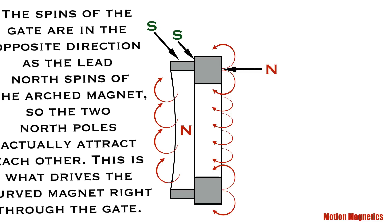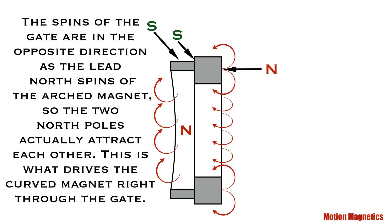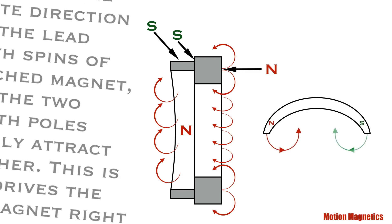Since the back spins are not going in the same direction as the leading north spins of the curved magnet, the repulsion between them is nullified. The spins of the gate are in the opposite direction as the lead north spins of the arced magnet. So the two north poles actually attract each other. This is what drives the curved magnet right through the gate.